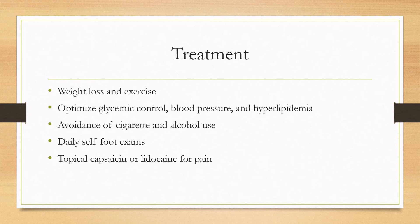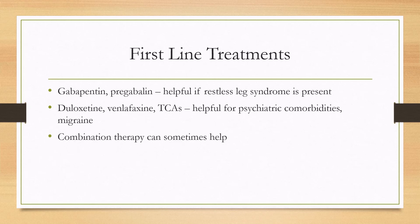For pain, topical capsaicin or lidocaine cream can be used for local pain. First-line medication treatments include gabapentin and pregabalin, which can be helpful and are a good choice if someone has restless leg syndrome. Other first-line agents include duloxetine, venlafaxine, and the tricyclics such as amitriptyline, which can be helpful if patients have psychiatric comorbidities or migraines. Small studies have also shown benefit from combination use, such as a gabapentinoid and an antidepressant in combination.